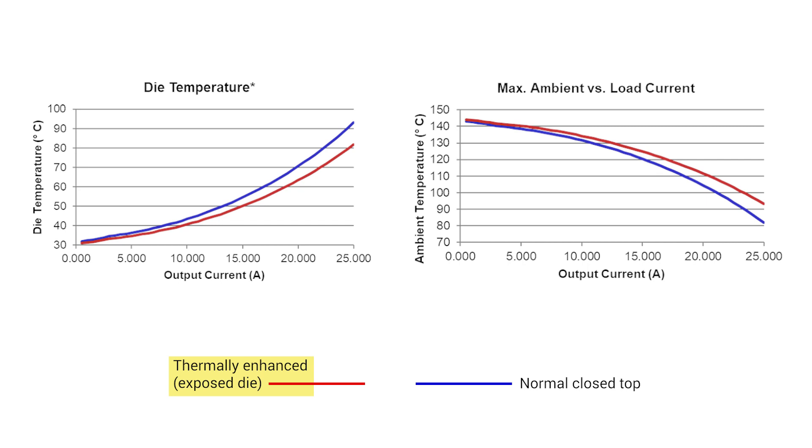The thermally enhanced device can deliver full load at ambient temperatures approximately 10 degrees Celsius higher than the standard package device can. At 100 degrees Celsius, the thermally enhanced device can deliver approximately 2.5 amps more current.